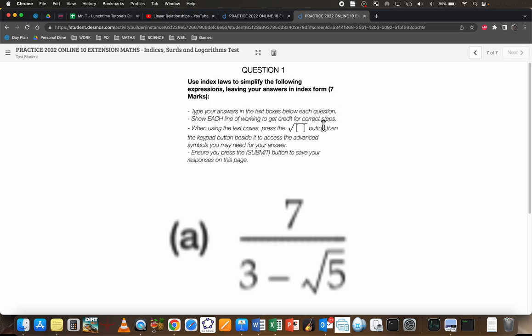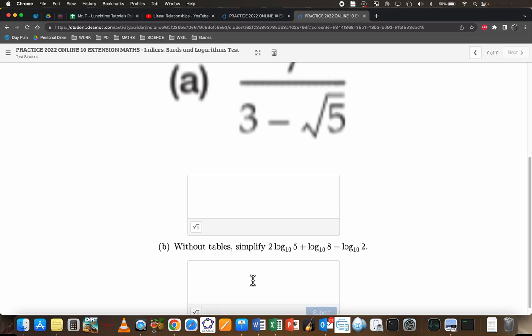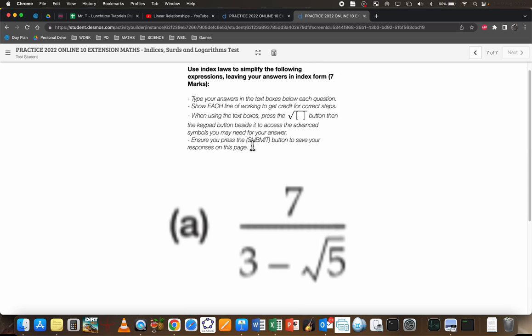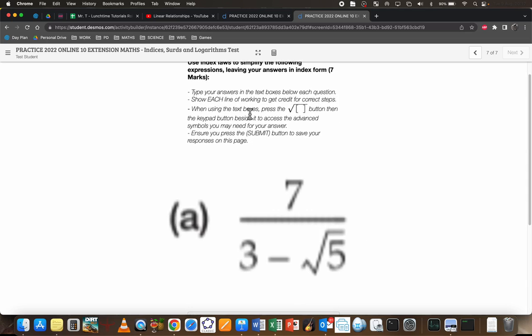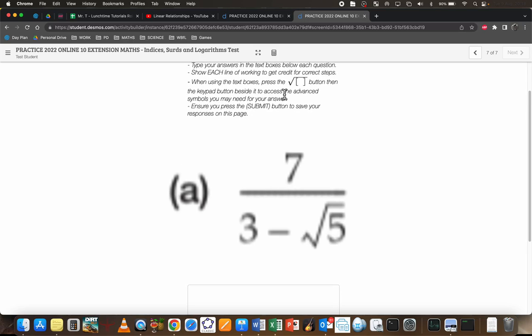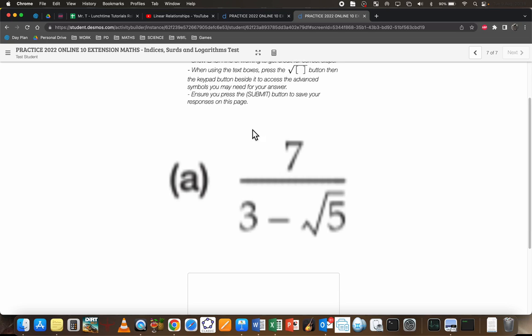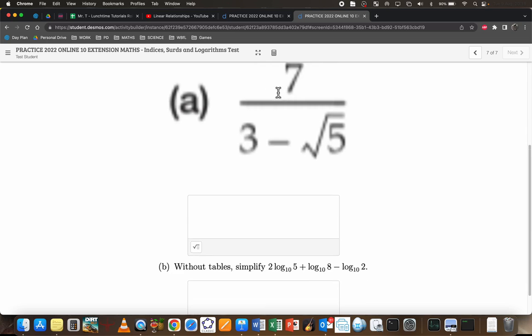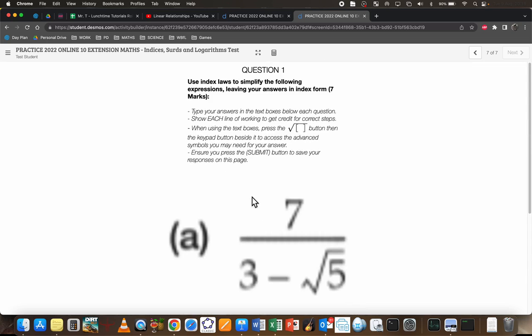These two questions here are for me to demonstrate how you go about typing answers to questions. The first one is for index laws. I just want to show you how you type the answers out. Type your answers in the text boxes below each question. Show each line of your working to get credit - don't just show the answer. If you want the highest chance to get all the marks that you could possibly get, show all your steps. When using the text boxes, you press the little button that looks like this, then the keypad button beside it to access the advanced symbols. Always ensure you press the submit button to save your responses.